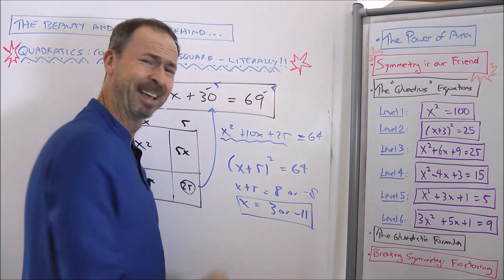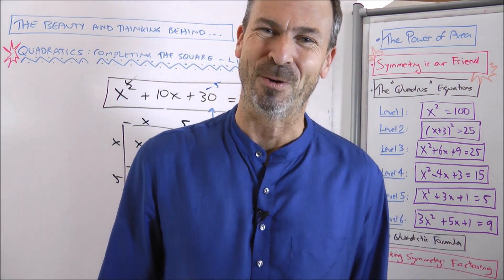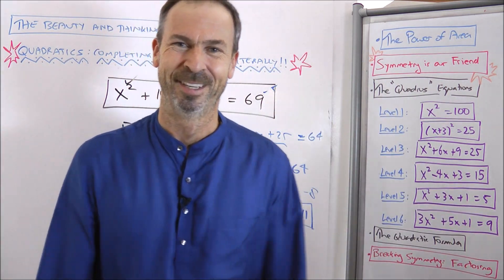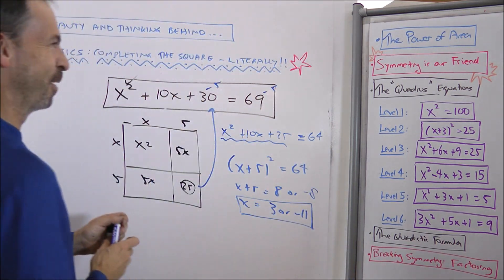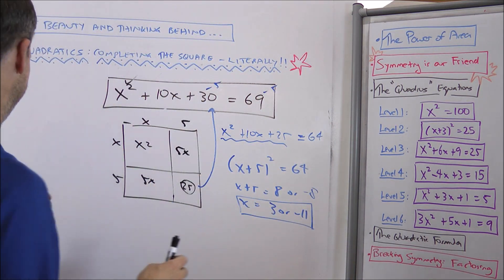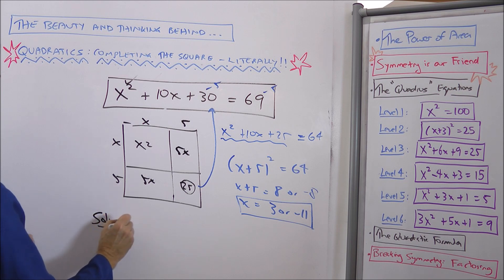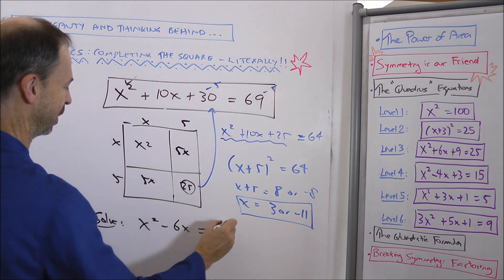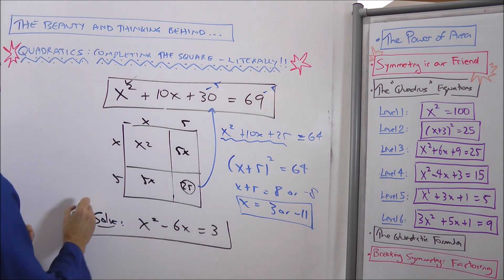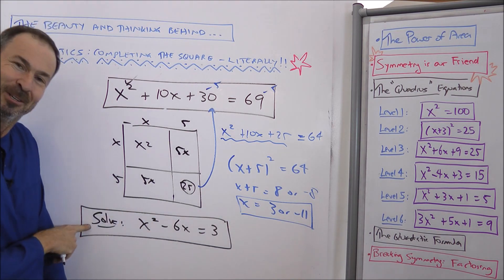Did I do the arithmetic correctly there? Beautiful. Just love this work. So actually, your turn — let me give one for you to do now on your own. Please solve this one: x squared minus 6x equals 3. Can you do that one?